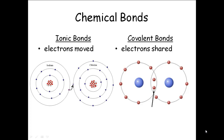A covalent bond involves sharing electrons. In this example here, these two electrons are shared — sometimes they go around this one, sometimes they go around that one. As opposed to when sodium loses that electron, that electron is always over here; it never goes back to sodium. Covalent bonds are much stronger than ionic bonds because the electrons are shared.